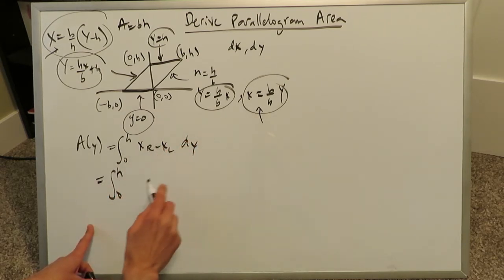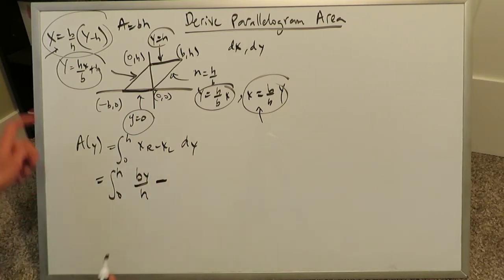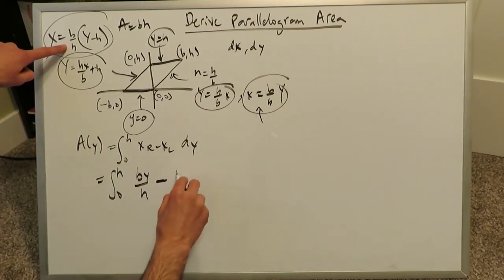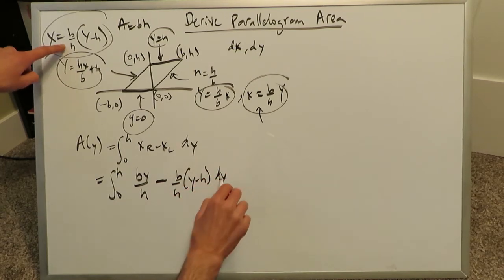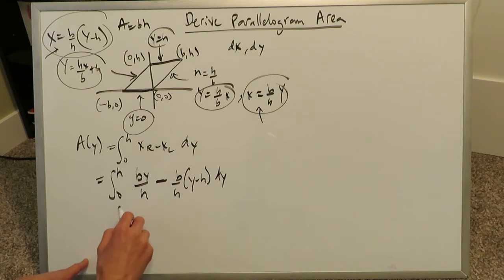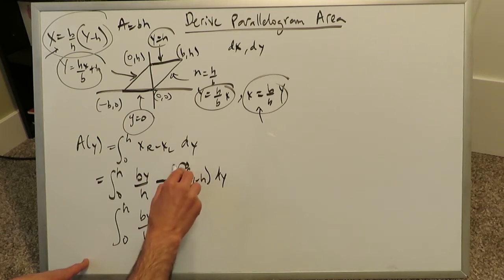What's my right side equation? It's this. By over h minus. What's my left side equation? It's this. All of this. B over h times y minus h, all with respect to dy. You can open this up, and let's do it. From h up to 0, we have by over h minus, we'll open this up, and this, with the effect of the signs. We'll have a by over h.